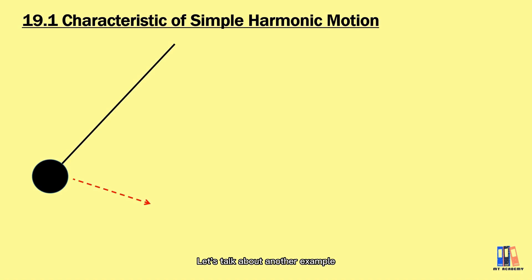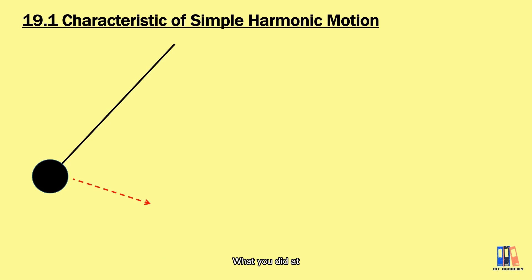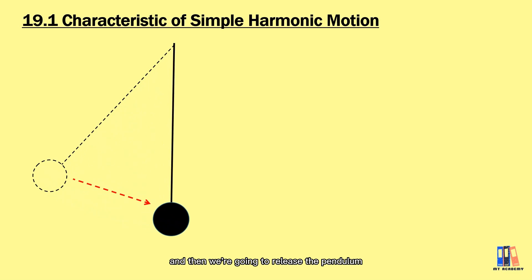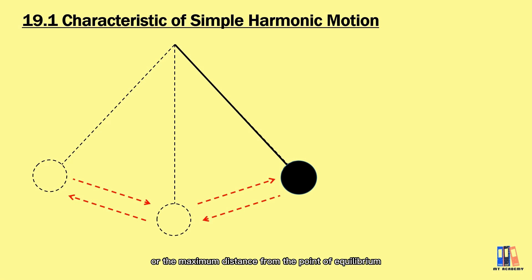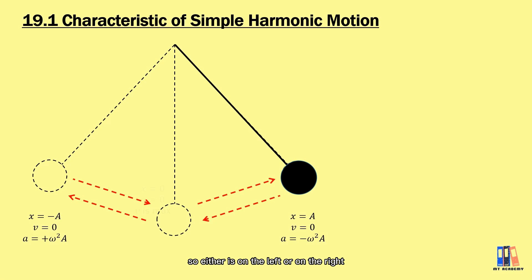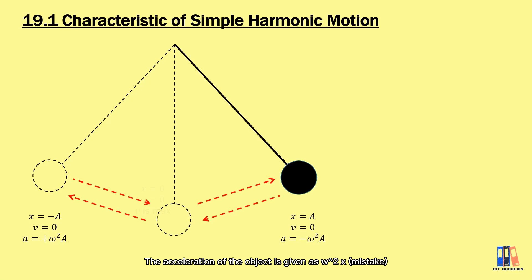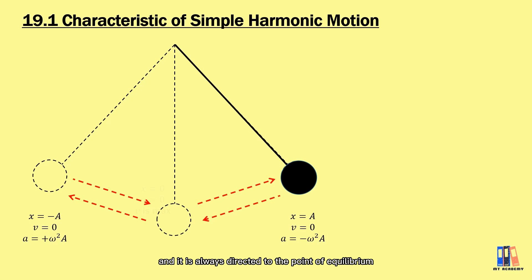Let's look at another example: the pendulum experiment from secondary school. You place the pendulum at a certain angle, release it, and the pendulum oscillates at a certain frequency. When the object is at the maximum amplitude — the maximum distance from the point of equilibrium, either on the left or right — the object is momentarily stopped and has zero velocity. The acceleration of the object is given as omega squared times A, and it is always directed toward the point of equilibrium. If the object is on the left, it has negative displacement and positive acceleration and resultant force.